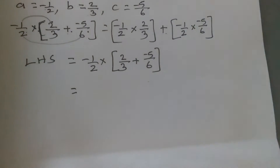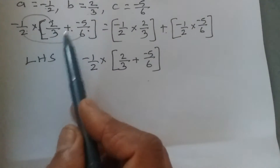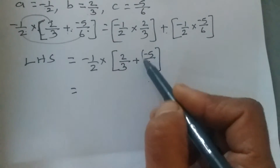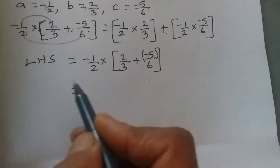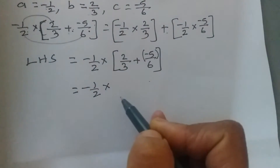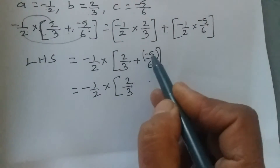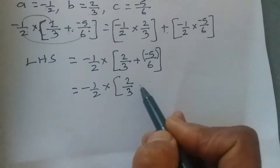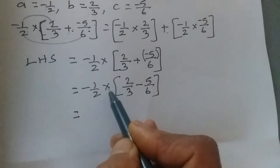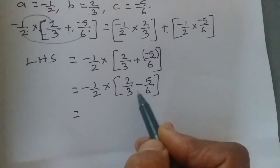For the LHS: −1/2 × (2/3 + (−5/6)). To avoid confusion with two signs together, we use a bracket. First, we remove the bracket by changing the two signs into a single sign. Plus × minus gives minus, so we have −1/2 × (2/3 − 5/6). Now we have two operations: multiplication and subtraction. We do subtraction first.